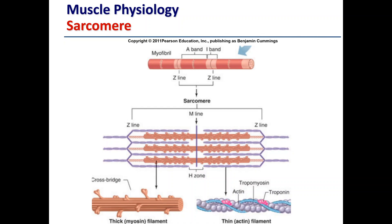Along the length of a myofibril we have a series of repetitions of sarcomere after sarcomere. The areas highlighted in red represent the I-band, which is pretty light in color. There is an I-band at each end of the sarcomere. The I-bands contain only thin filaments — there is no thick filament, no myosin in this area — and therefore under the microscope these areas appear lighter in color.